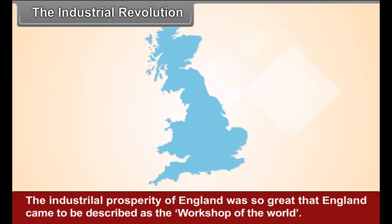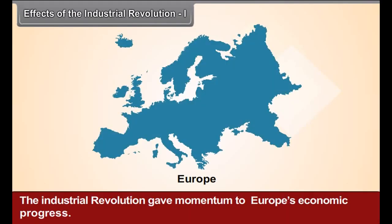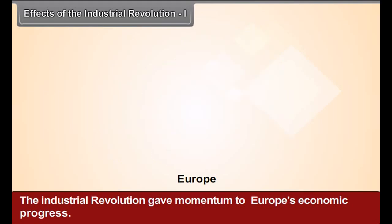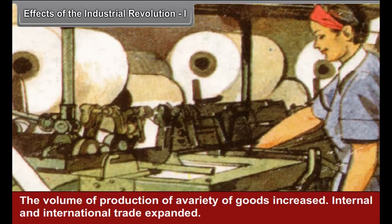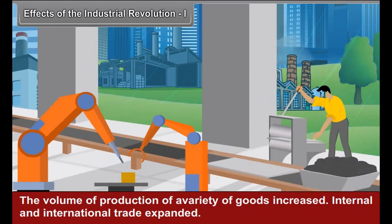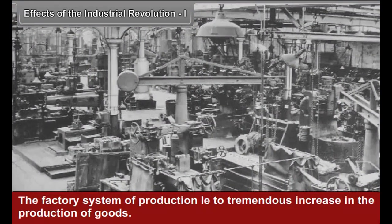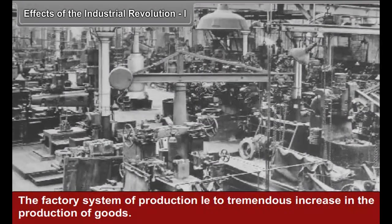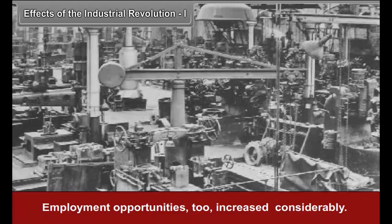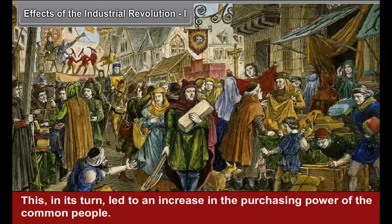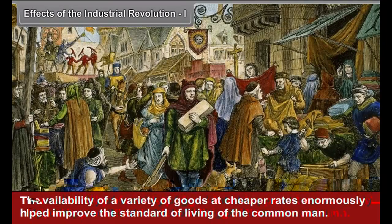The industrial prosperity of England was so great that it came to be described as the workshop of the world. The Industrial Revolution gave momentum to Europe's economic progress. The volume of production of a variety of goods increased, and internal and international trade expanded. The factory system led to a tremendous increase in goods production and considerably increased employment opportunities. This led to an increase in the purchasing power of the common people, and the availability of a variety of goods at cheaper rates enormously helped improve the standard of living of the common man.